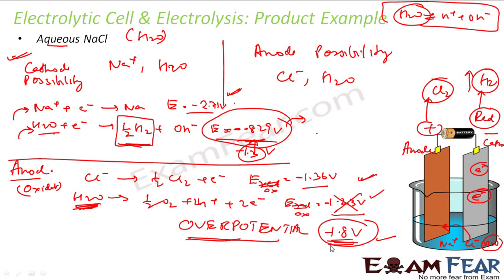Without applying overpotential, it looks like the competition is between chlorine and water, and water would win to get oxidized. But the moment you apply the overpotential concept, you see that water needs 1.8 volts to oxidize, while chlorine needs only 1.36 volts. Thus chlorine will win and chlorine will get oxidized to chlorine gas.